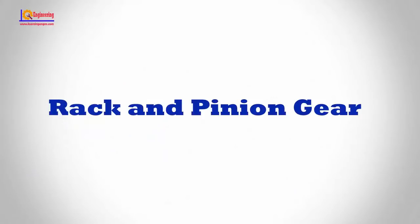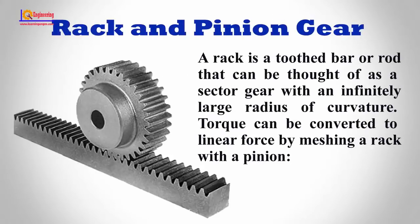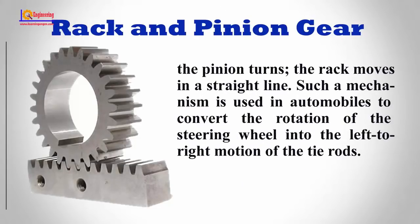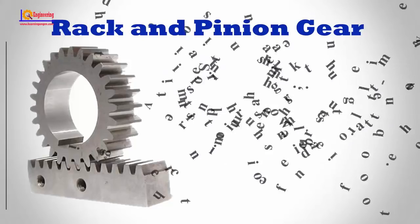Rack and Pinion Gear. A rack is a toothed bar or rod that can be thought of as a sector gear with an infinitely large radius of curvature. Torque can be converted to linear force by meshing a rack with a pinion. The pinion turns and the rack moves in a straight line. Such a mechanism is used in automobiles to convert the rotation of the steering wheel into the left-to-right motion of the tie rods.